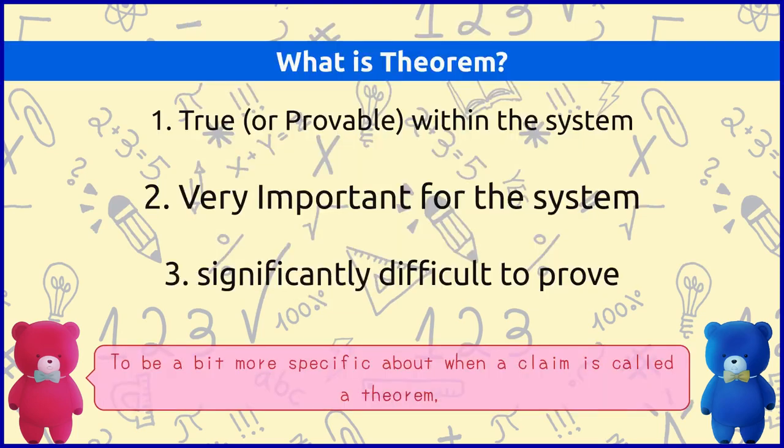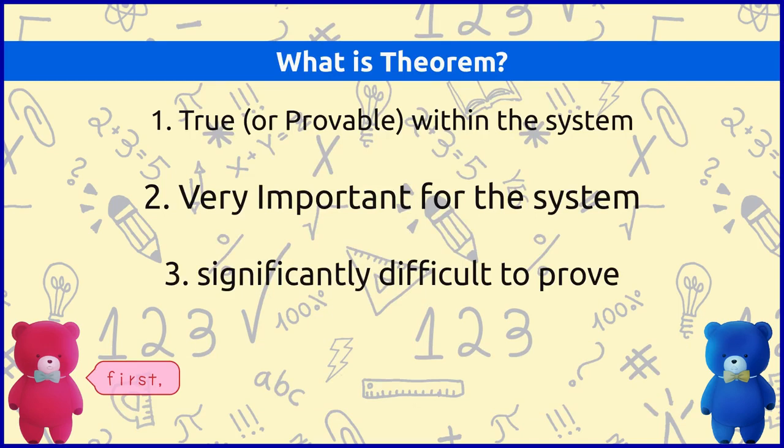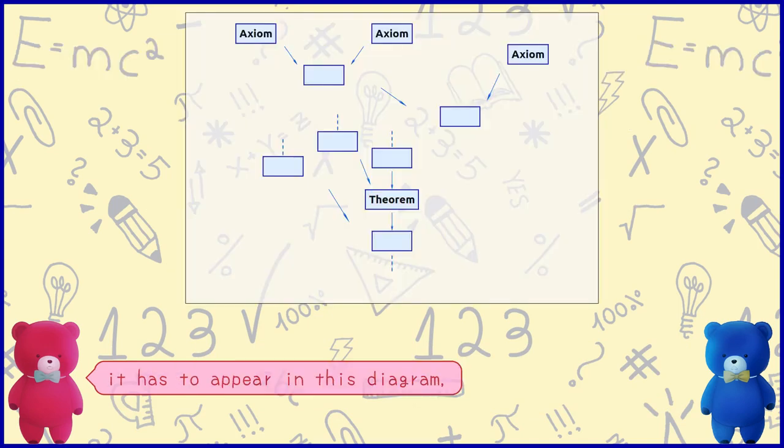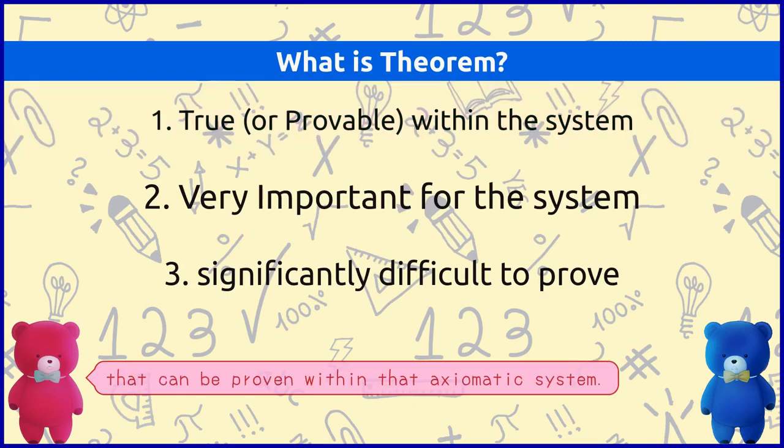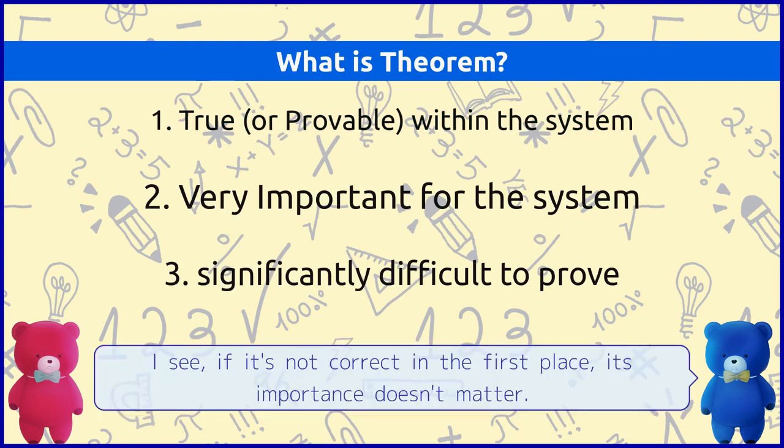To be a bit more specific about when a claim is called a theorem. First, it has to appear in this diagram. Meaning from axioms, it has to be derived. Simply put, it has to be a correct claim that can be proven within that axiomatic system. I see. If it's not correct in the first place, its importance doesn't matter.